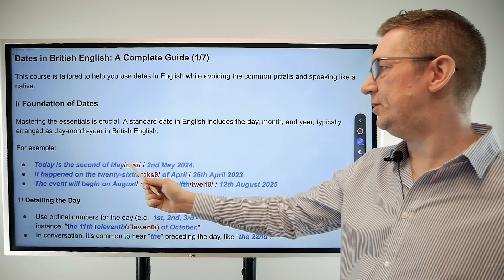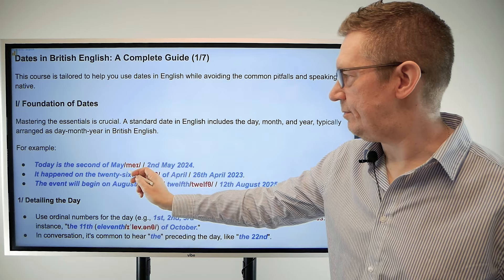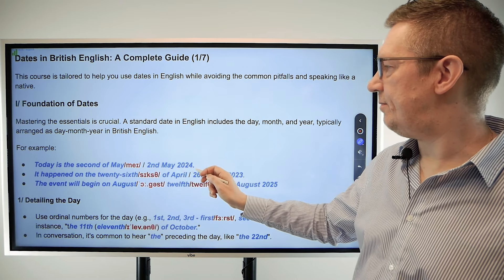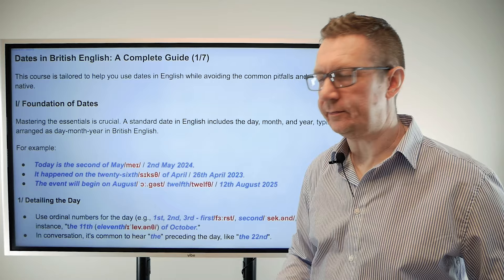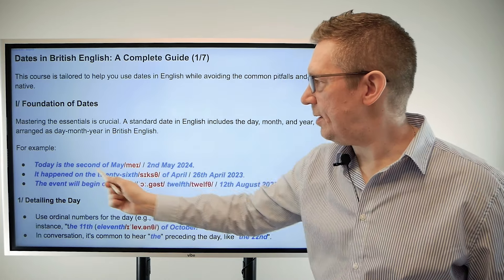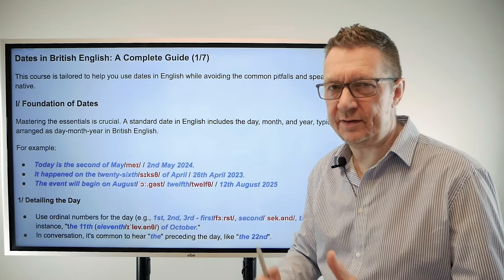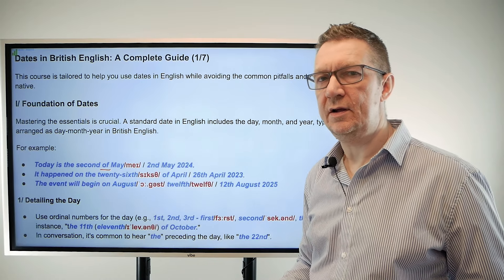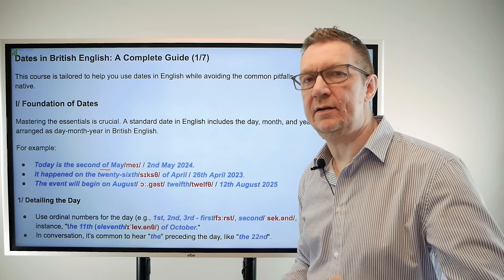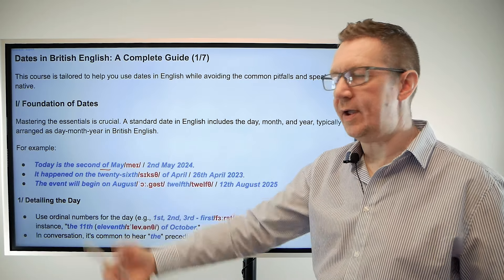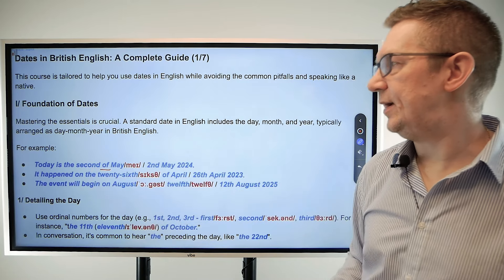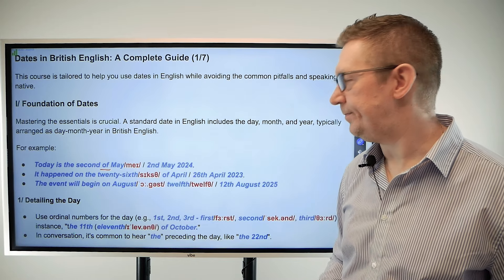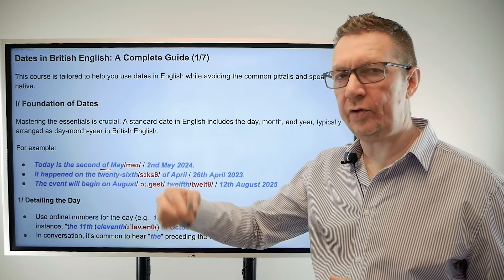Dates are structured this way in British English: we have day, month, and year — it's slightly different in American English, but that will be talked about another time. So today is the 2nd of May — May with this 'ay' sound — 2nd of May 2024. This is how we structure it: we use 'the 2nd of May.' We do use 'of' in British English; we don't say 'May 2nd' like they do in American English — we say 'the 2nd of May.'